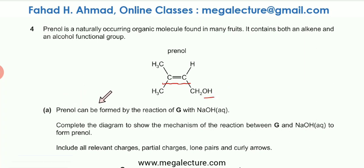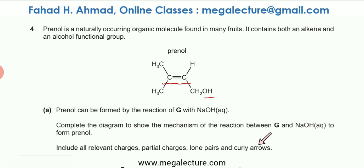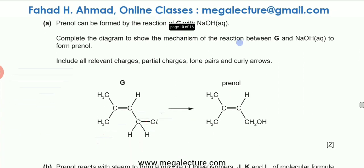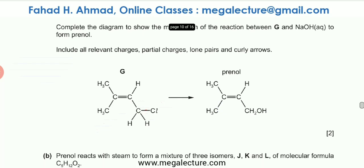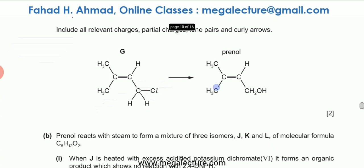Part A reads that Prenol can be formed by the reaction of G with NaOH. Complete the diagram to show the mechanism of the reaction between G and NaOH to form Prenol, including all relevant charges, partial charges, lone pairs, and curly arrows. G is this compound, and the Cl is going to be substituted by OH.